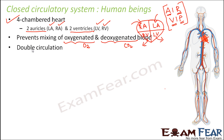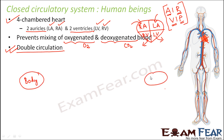Circulation refers to the movement of blood from the heart to different parts of the body and through the lungs. This is called double circulation because there are two circulations taking place — one for oxygenated blood and one for deoxygenated blood. To illustrate this, let us consider the body, the lungs, and the heart containing its four chambers.